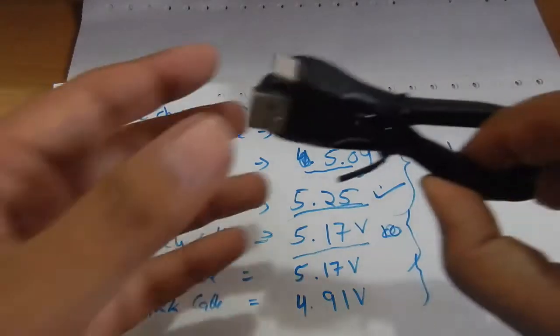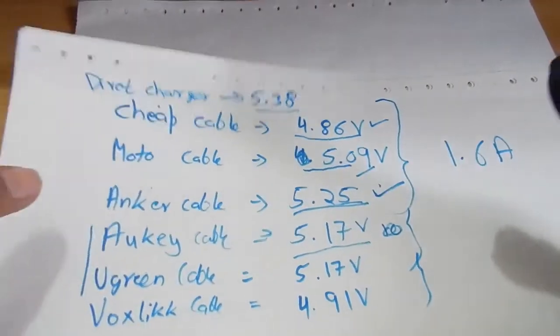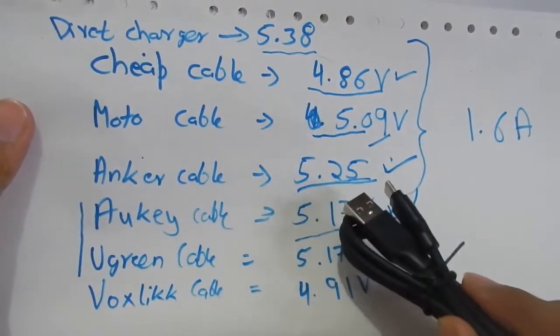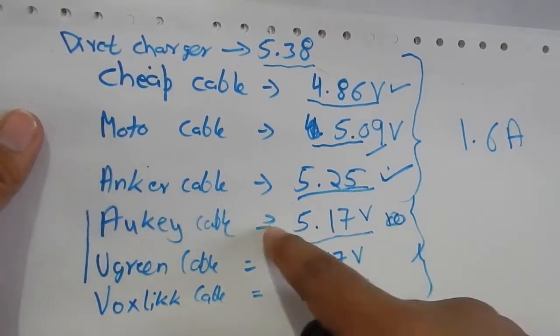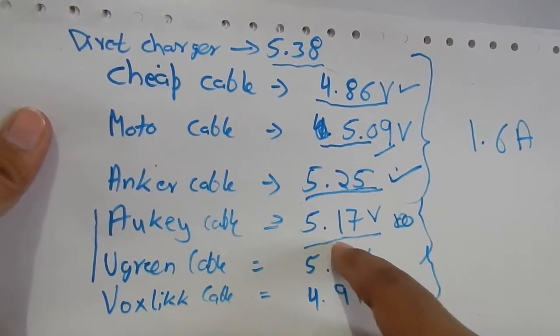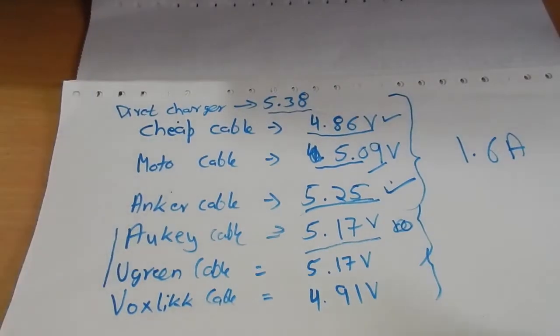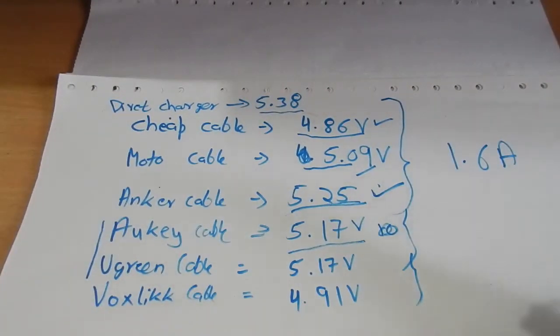In this video we are going to test a one meter long USB-C cable and compare it to the Auki micro USB cable. The micro USB cable of Auki brand gave us 5.17 volts at 1.6 ampere.